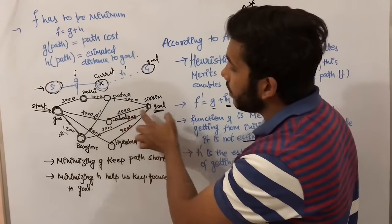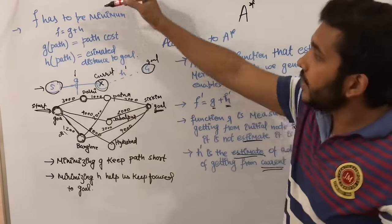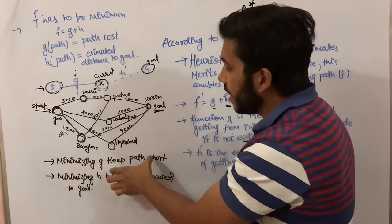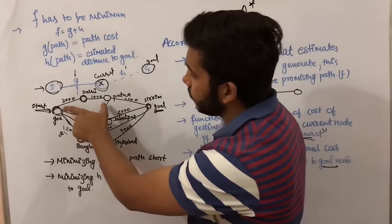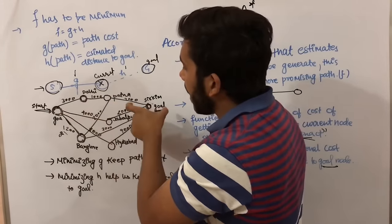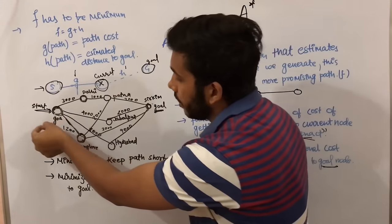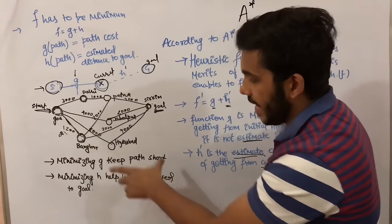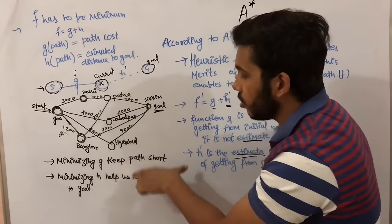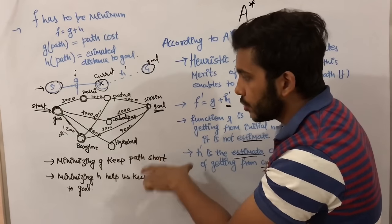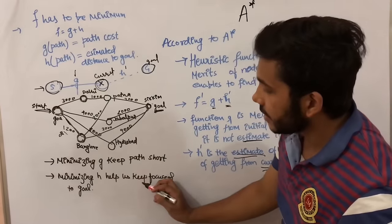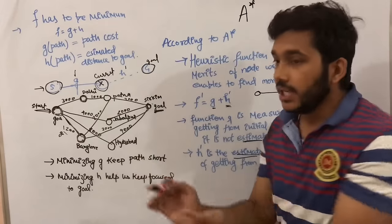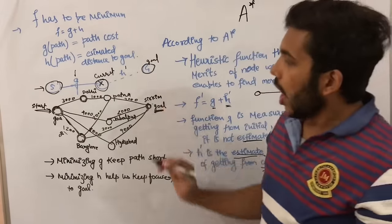When you have to minimize function f, minimizing g keeps the path short — it is the estimated distance to goal. If you minimize g, meaning keeping the path from start to current node as short as possible, the travel path will be short. And if we are reducing h, then minimizing h keeps focus on the goal — we become more focused on reaching our goal.